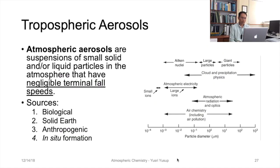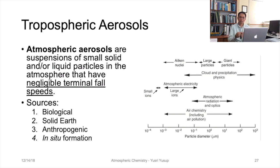Now we go into the topic of tropospheric aerosols. Atmospheric aerosols, as opposed to atmospheric gases, are suspensions of small solid and/or liquid particles. The key word here is particles — these particles exist in the atmosphere and since they are particles, there are fall speeds or settling speeds associated with them. However, atmospheric aerosols are categorized as particles with negligible terminal fall speeds, meaning their falling speeds can be considered as zero.